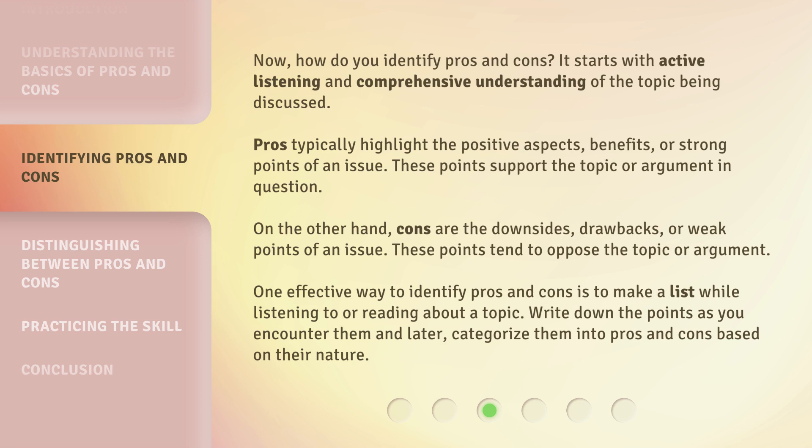On the other hand, cons are the downsides, drawbacks, or weak points of an issue. These points tend to oppose the topic or argument. One effective way to identify pros and cons is to make a list while listening to or reading about a topic. Write down the points as you encounter them and later categorize them into pros and cons based on their nature.